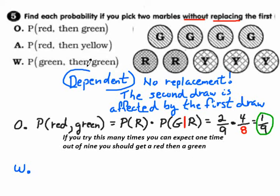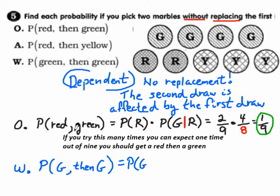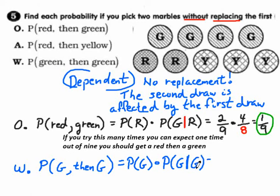Now: probability of pulling out a green then another green — be careful, this gets tricky. The probability of a green times the probability of a green given that you already used up a green. So probability of green on the first draw times probability of green on the second draw, given you already removed a green on the first draw.